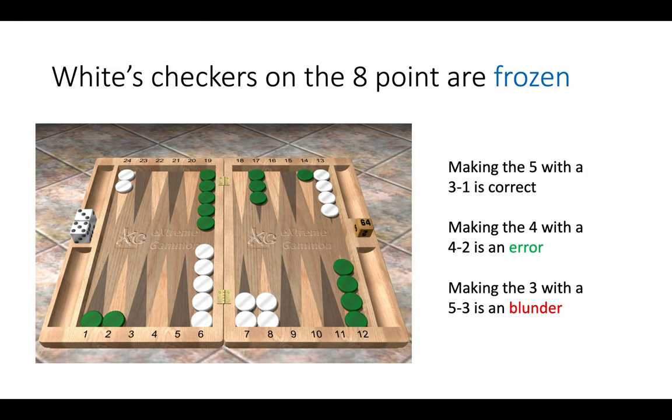Making the 4-point, even though it's the second best point on the board, is an error. And only making the 5-point with the 3-1 is correct, just because it's the best point to make and the sacrifice is worth it. But you can see here the value of green's blot on the 23, freezing white checkers on the 8-point.